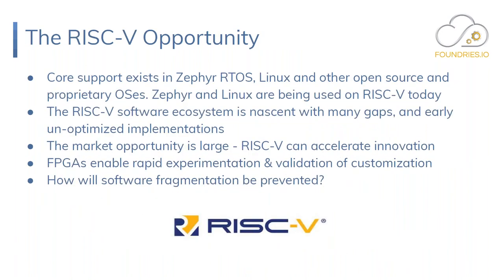Where does this come in handy with RISC-V? Core support exists today for Zephyr, for Linux, and for a number of other open source and proprietary OSes. The software ecosystem is still in its very early stages with many gaps. Most of the software that exists is not fully optimized yet, and there are gaps in things like Golang for building Docker — you can't run Docker yet. It's close; some enthusiasts have nearly got it working as a prototype, but it's not upstream quality yet.